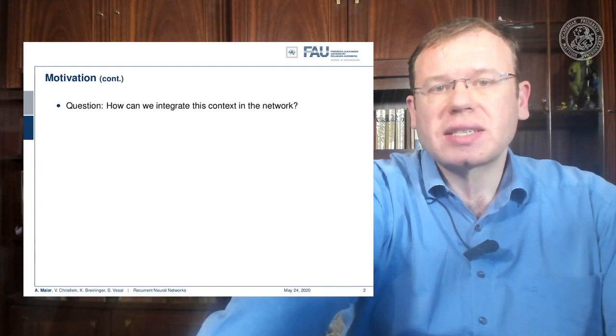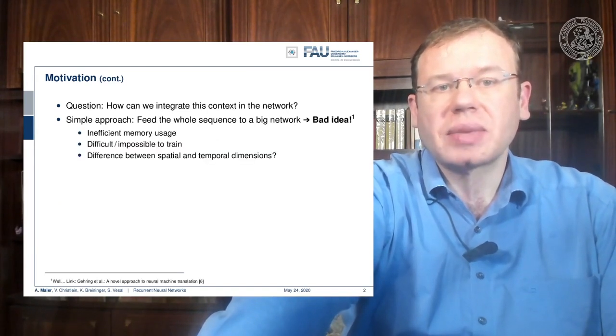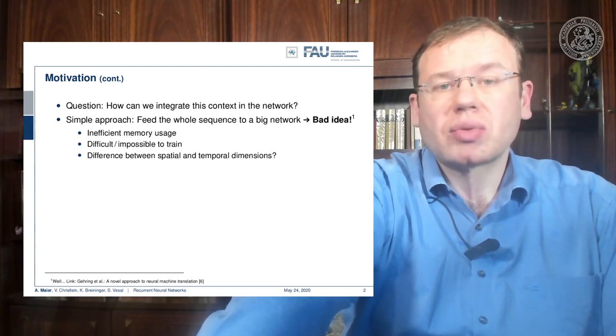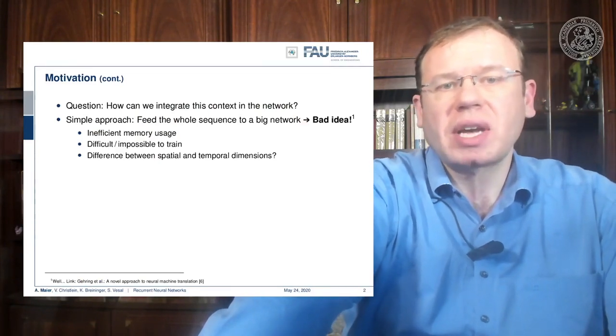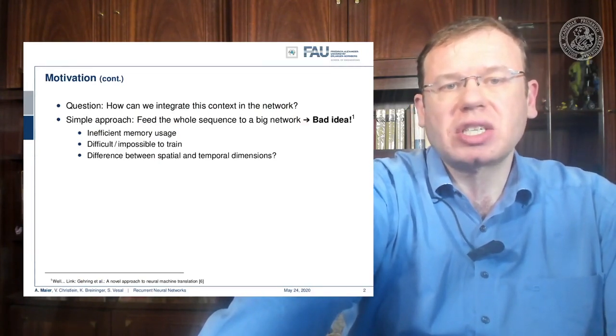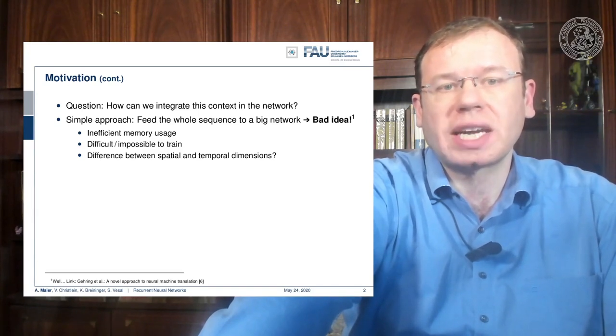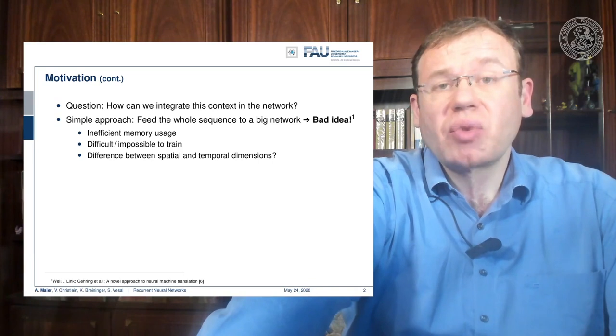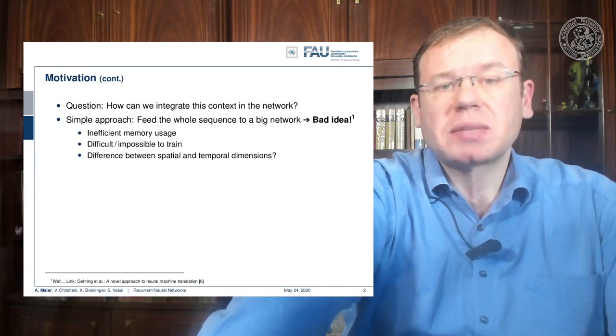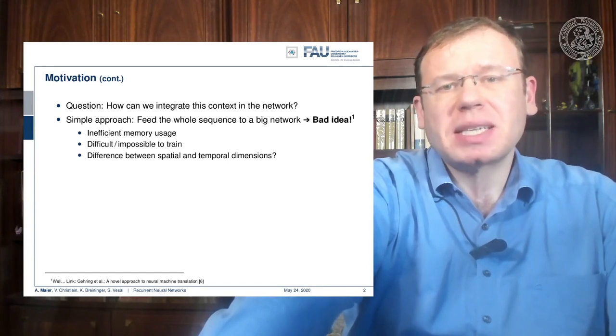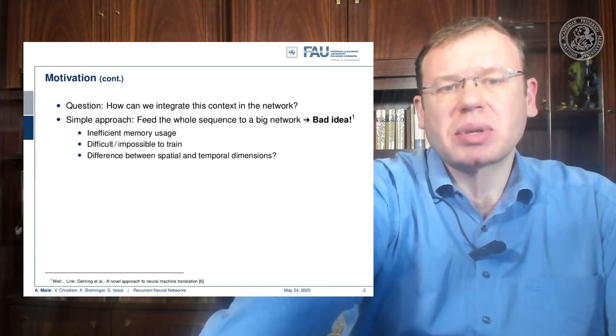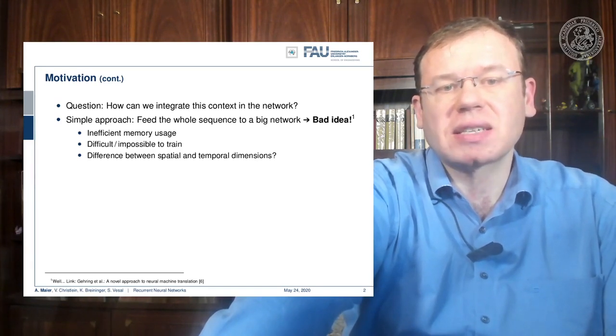So the question is now, how can we integrate this context into the network? The simple approach would be to feed the whole sequence to a big network. And this is potentially a bad idea because we have inefficient memory usage. It's difficult to train or even impossible to train, and we would never figure out the difference between spatial and temporal dimensions. We would just handle all the same. Actually, maybe it's not such a bad idea for rather simple tasks, as you can see in the reference down on the slide because they actually investigated this and found quite surprising results with CNNs.